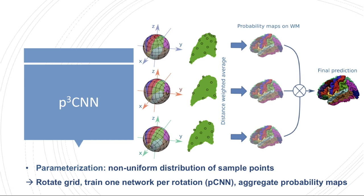The segmentation accuracy may therefore vary depending on the location of a given structure. To alleviate this problem of the differently distributed sample points, we propose to rotate the grid such that the poles are always located along a different main axis — either the z, y, or x axis — and then train one network per rotation. We then aggregate the resulting probability maps by mapping the label probabilities to the original white matter spherical mesh by computing a distance-weighted average of the three closest vertices on the sphere to each target vertex.